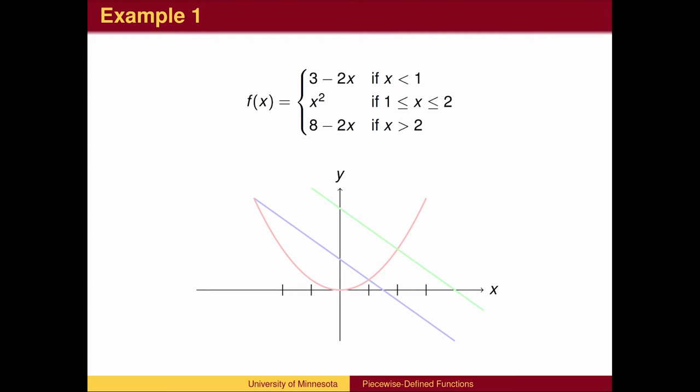In this example, part of the function is formed by the line y equals 3 minus 2x. Part of the function is formed by the parabola y equals x squared, and part of the function is formed by the line y equals 8 minus 2x.